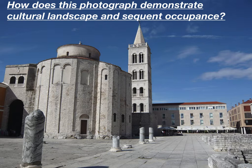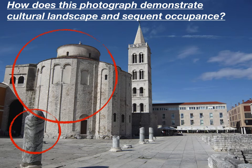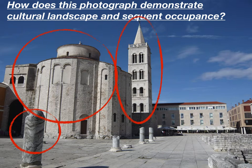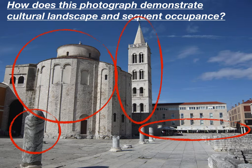The next two terms are cultural landscape and sequent occupants. This is a picture I took in Croatia a few summers ago, and it demonstrates both. The pillars here were created by the Romans. Then we have a church about a thousand years old that predates the schism separating Christianity into Catholic and Eastern Orthodox — a very old Christian church. Then we have another Catholic church about 300 years old, which demonstrates the current religion of the country. And finally, a modern-day cafe, showing how people currently spend their time.